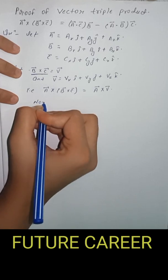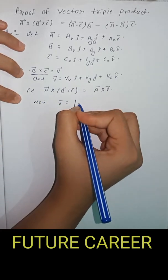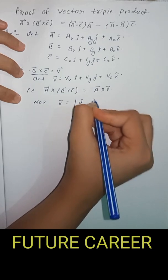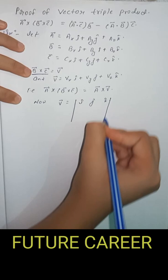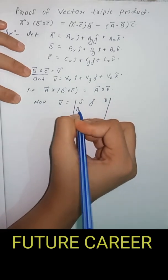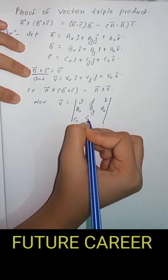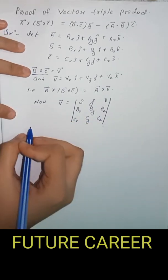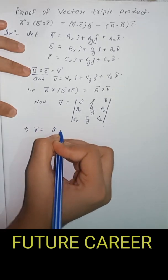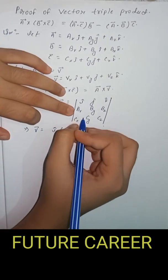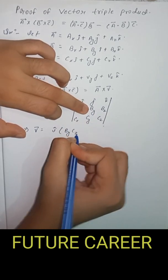Now V equals the cross product of B and C, computed using the determinant with i cap, j cap, k cap in the first row, Bx, By, Bz in the second row, and Cx, Cy, Cz in the third row. This gives V equals i cap into By Cz minus Bz Cy.